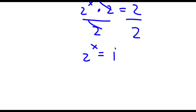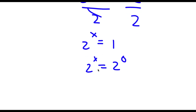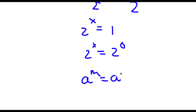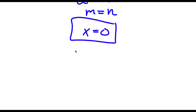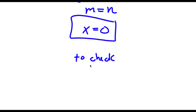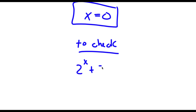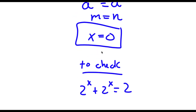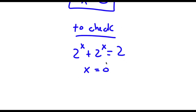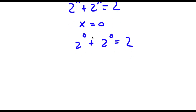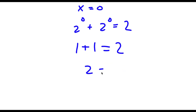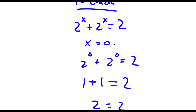Now anything to the power of 0 is equal to 1, so I'm going to rewrite 1 as 2 to the power of 0. Now if I have something in the form a to the power of m is equal to a to the power of n, this means that m is equal to n. So in this case, x is equal to 0. Now to check: 2 to the power of 0 plus 2 to the power of 0 is equal to 2. Anything to the power of 0 is 1, so 1 plus 1 equals 2, and 2 equals 2 — so our solution is correct.